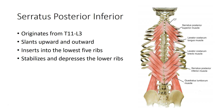The serratus posterior inferior are a set of muscles at the bottom of the ribcage that work diagonally compared to other rib muscles like the serratus posterior superior or the levatoris costarum. These muscles come from the spinous processes of thoracic vertebrae 11 and 12, and lumbar vertebrae 1, 2, and 3. They slant upward and outward to insert into the lowest 5 ribs, pulling downward on the lower ribs and stabilizing them for the action of other muscles like the internal intercostals.